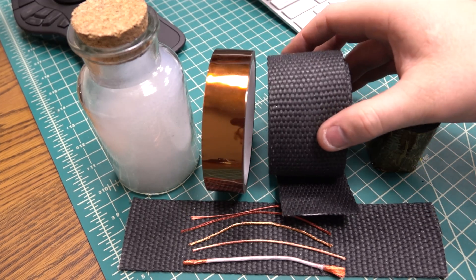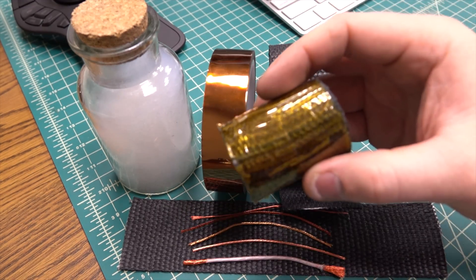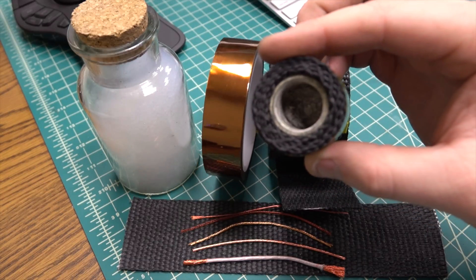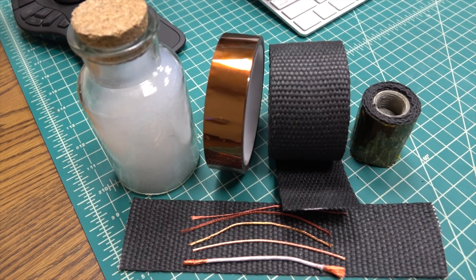Litz wire shown at the bottom of the screen is wire that consists of many strands of individually insulated wires. Litz wire is often used in induction heating applications for more efficient systems.